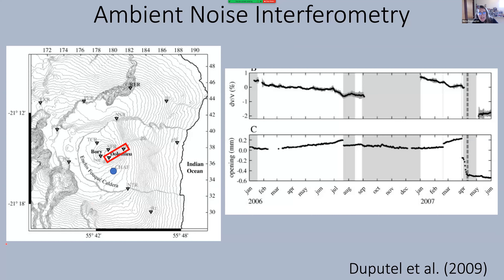This is one of the earliest studies using this technique at a volcanic system — a 2009 study by Dupatel et al. at Piton de la Fournaise. The top plot shows changes in seismic velocity with time reflecting changes between two stations near the summit. The big observation was that preceding eruptions, shown as gray periods, the authors showed slowdowns or decreases in seismic velocity — a result of magma intrusion and fracture opening. This remarkable result got volcano observatories interested in using this technique for forecasting volcanic eruptions.